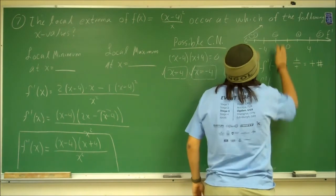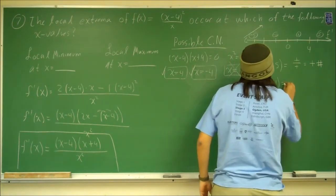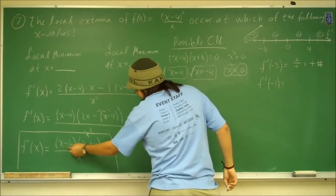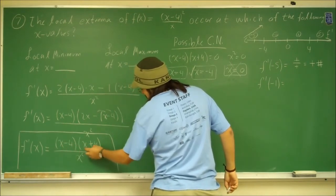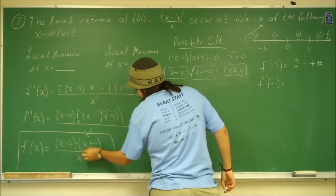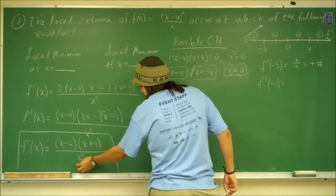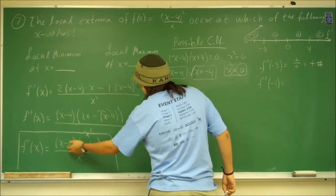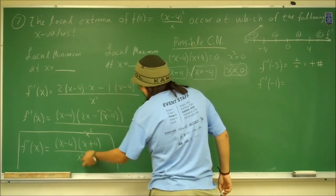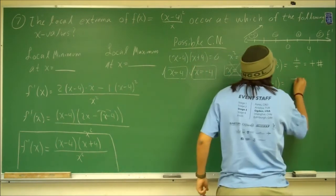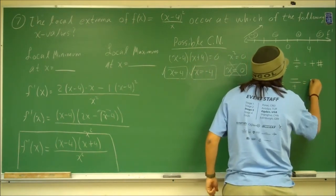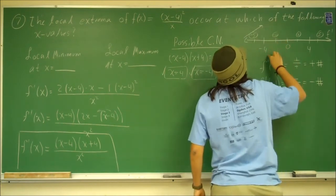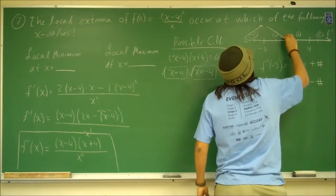Now f prime at the next test point, negative 1. Negative 1 minus 4 is negative; negative 1 plus 4 is positive. Negative times positive is negative. And negative 1 squared is positive. So negative divided by positive is negative — meaning the function is decreasing from negative 4 to 0.